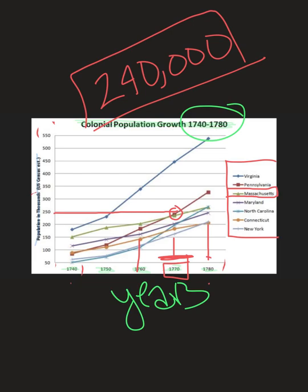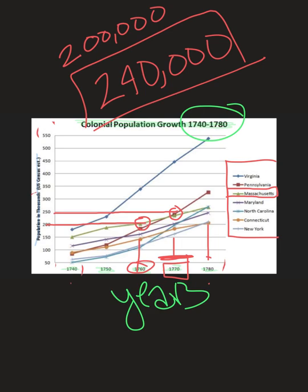It's all about following the lines and making estimates if it's not exactly on a gridline. Let's take Massachusetts and go to 1760 — down 10 years. We find the green line with the triangle, and this one is actually right on the line, so I can say that in 1760 Massachusetts had 200,000 people. So if the question asked how much did the population grow from 1760 to 1770, it went from 200,000 to 240,000 — meaning the population of Massachusetts grew about 40,000 people from 1760 to 1770.